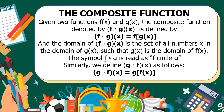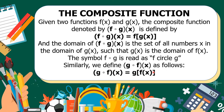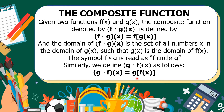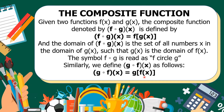The symbol f circle g is read as f circle g. Similarly, we define g circle f of x as follows: g circle f of x is equal to g of f of x. This means that to find g circle f of x, take g of x and replace x with f of x.